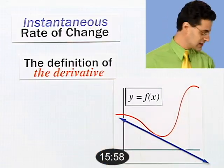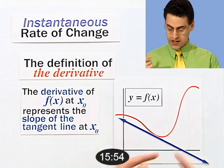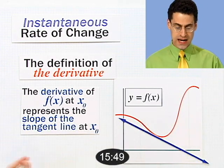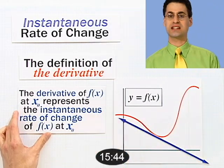The derivative gives us the slope of the tangent line. If you want to find the slope of a tangent line, take the derivative and evaluate it at the point you want. The derivative also represents instantaneous rate of change — want to know how things are changing? Take the derivative, plug in, and that tells you how things are changing at that instant.